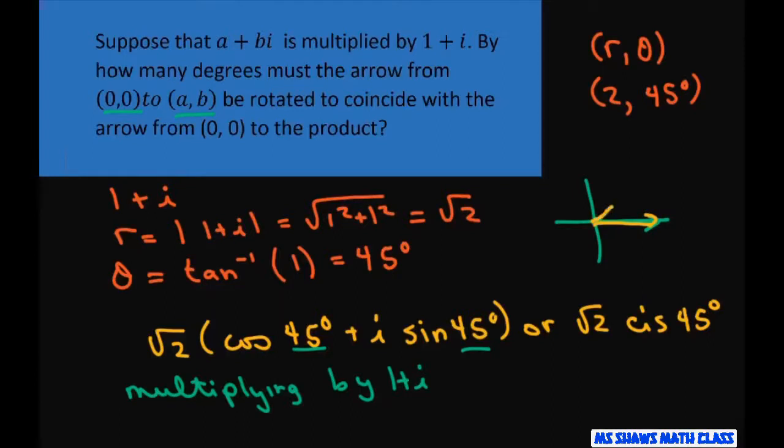Square root of 2 is about 1.73. So there's the rotation of 45 degrees.